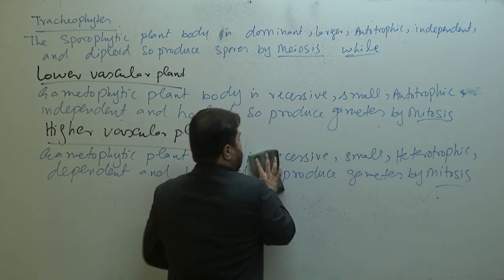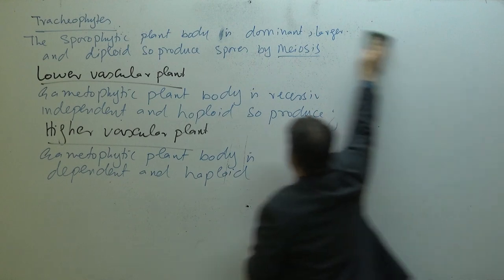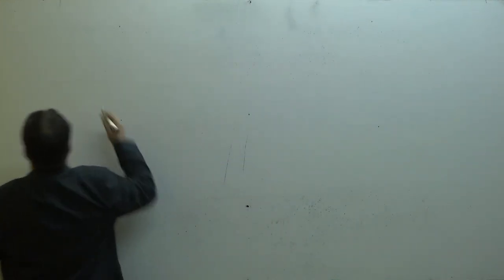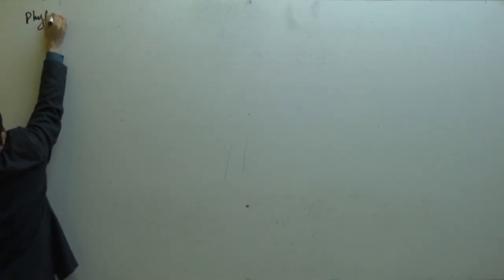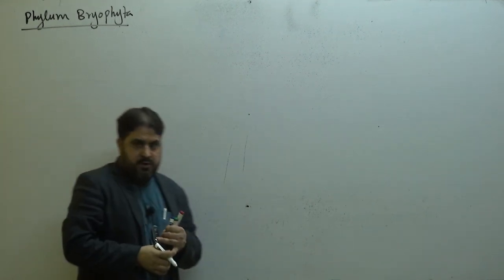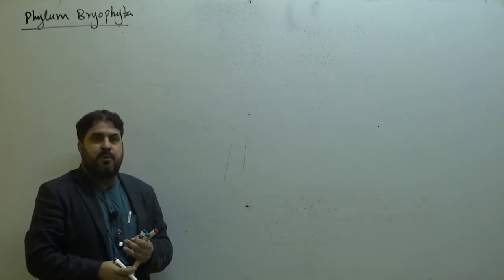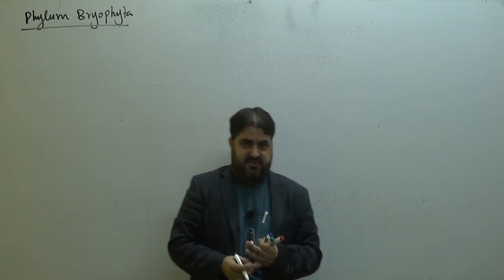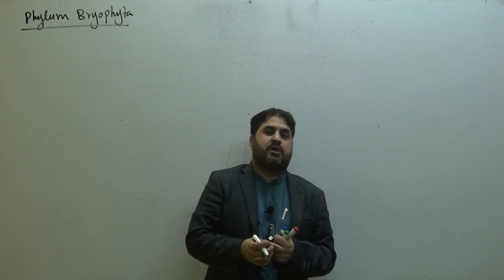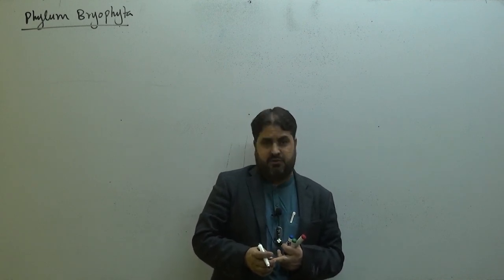Now we are going to discuss the life cycle of bryophytes. Phylum Bryophyta are non-vascular plants, also called amphibious plants because they need water for fertilization. They are gregarious in nature. They have no root, no stem, no leaves, no flowers, and no seeds — they only reproduce through spores. Water is absorbed and food is distributed by diffusion.